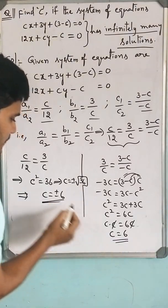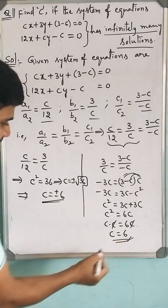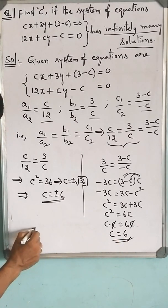What is the C value which is satisfying both cases? That is, plus 6. Plus 6 is satisfying both cases.